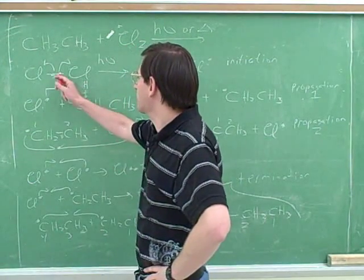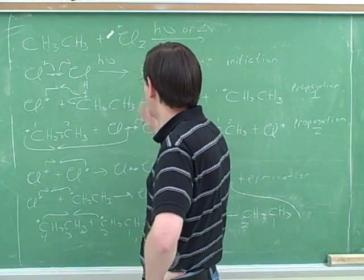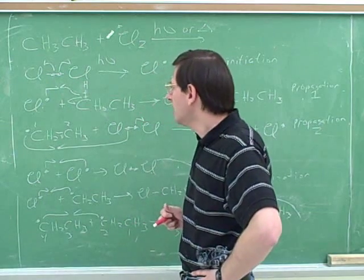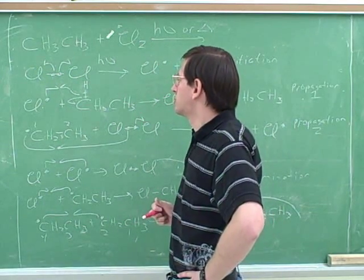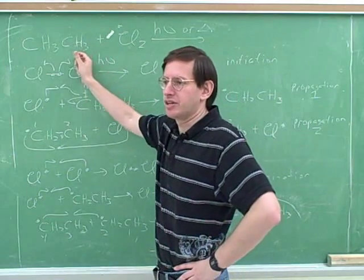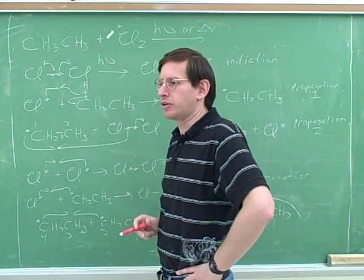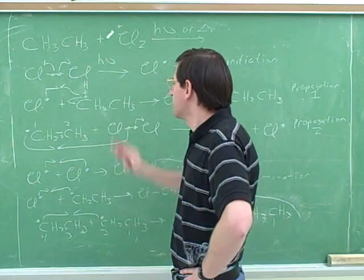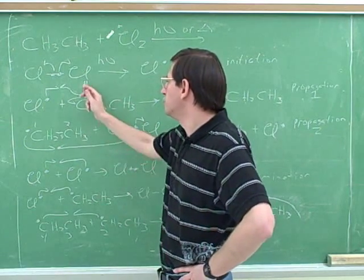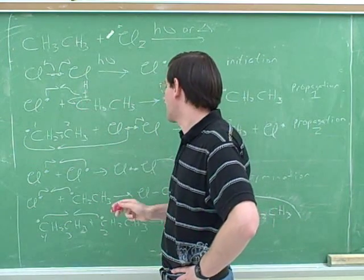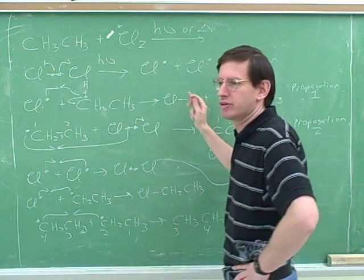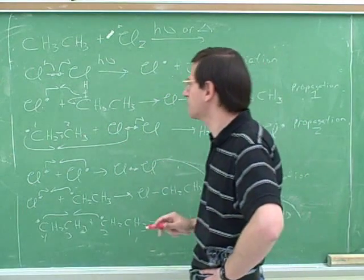The initiation step is when we break the chlorine into two pieces that are radicals. Now remember, what are we going to be doing? We're substituting a chlorine for a hydrogen. So the first propagation step is when we remove the hydrogen, and the second propagation step is when we add the chlorine.